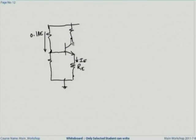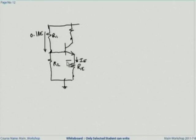One more thing regarding the choice of R1 and R2: these R1 and R2 will come in parallel in the AC equivalent circuit. Remember that your input impedance is going to be affected by this - it comes in parallel with Rpi. If you have a bypass capacitor in the emitter, this comes in parallel with Rpi. Generally we assume that the input impedance is Rpi on the assumption that R1 parallel R2 is much greater than Rpi. These are the considerations and that should take care of your doubt.